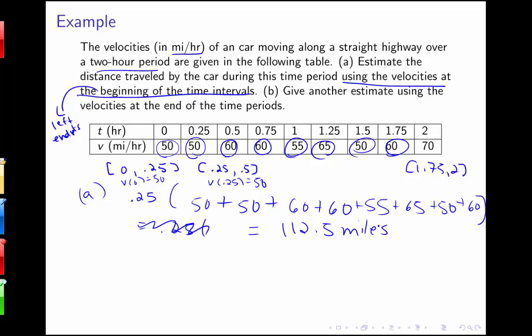This ends up giving us 112.5 miles traveled. So this is a pretty good estimate. We want to look at a couple of the other estimates we might get. If we had more information, I could break this up into smaller intervals. That would help me get something more accurate. But here I only have a record of the velocity at these quarter hour intervals.